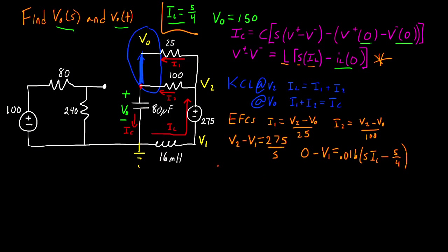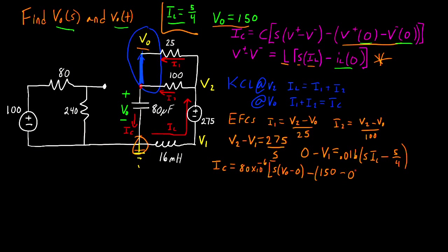Now lastly, we have our capacitor. I_C = C × s × (V+ − V−) minus the initial conditions. So I_C(s) = 80×10⁻⁶ × s × (V_o − 0) minus the initial condition. V+(0) was found to be V_o = 150, so we subtract 150. V−(0) was our ground node, equal to 0, so minus 0. That is the equation for the capacitor.